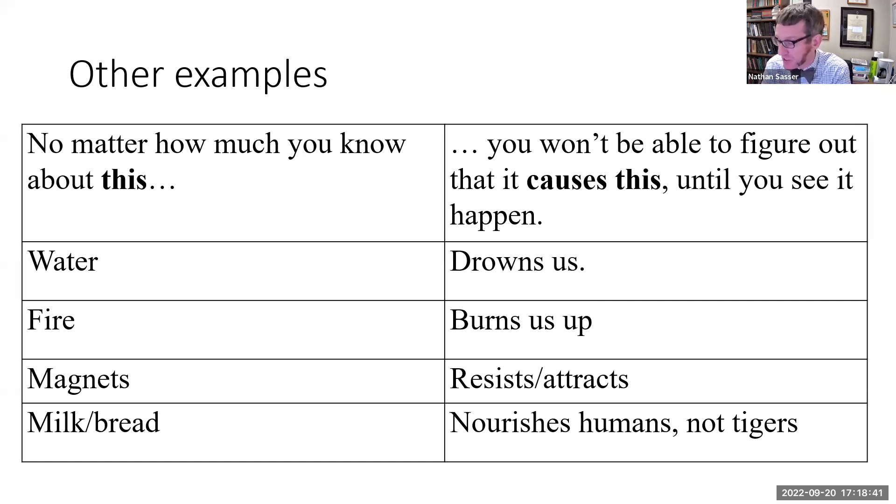You wouldn't know that magnets were going to resist or attract unless you had seen that kind of object do that kind of thing before, and you wouldn't know whether milk and bread was going to nourish humans or nourish tigers or both or neither, unless you had seen that kind of thing happen before. We only know causal relationships based on past experiences, Hume wants to say. Now so far, that's not a skeptical problem, but he's going to lead us to a skeptical problem in part two, which I will discuss in the next video.